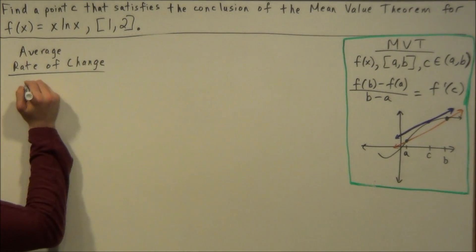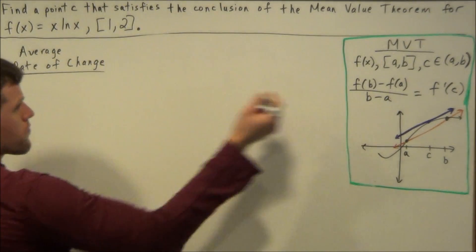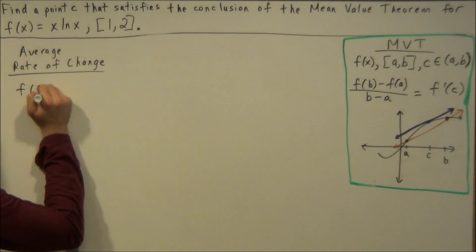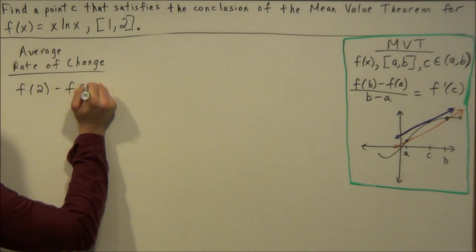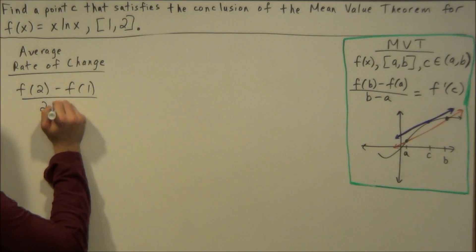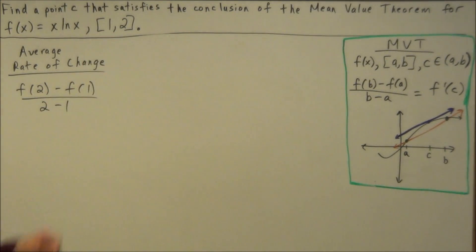So to find our average rate of change, we're going to apply our formula here, and we have f(2) minus f(1) over 2 minus 1. Remember, a and b are just our endpoints of our interval here.